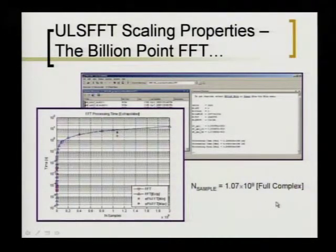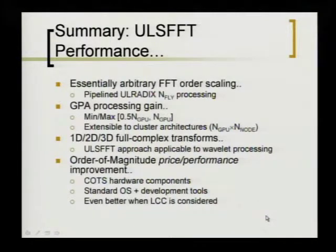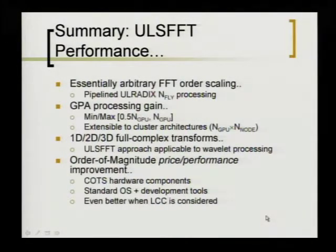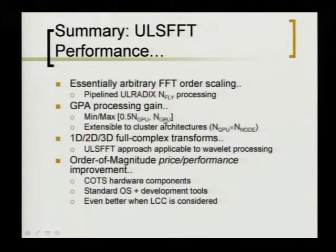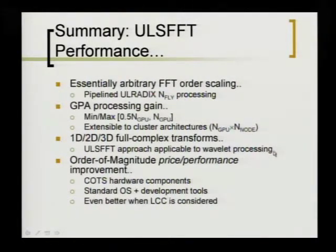The number of samples is 1.07 times 10 to the 9, full complex. To give a quick summary: what we achieve is essentially arbitrary FFT order scaling, and we're leveraging pipeline processing of these ultra-large radix flies. Our processing gain is somewhere in the area of 0.5 times the number of GPUs up to the actual number of GPUs. It's extensible to cluster architectures — 1D, 2D, 3D. This approach should also be applicable to wavelet processing; structurally it's definitely applicable, but some of the basis functions used in wavelets look pretty nasty, so I'd have to run some experiments on that.